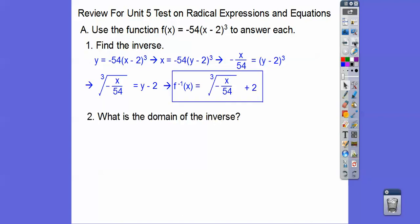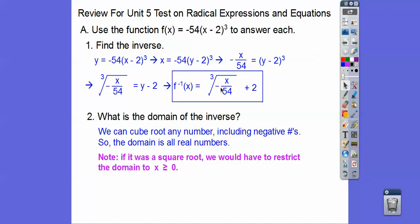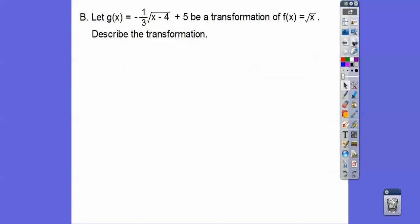The next one says: what is the domain of the inverse? Since it's a cube root, we don't have any restrictions, so the domain is all real numbers. If it was a square root, we'd have to restrict the inside to be greater than or equal to 0. For square roots, the value inside has to be greater than or equal to 0. But for cube roots, there are no restrictions.